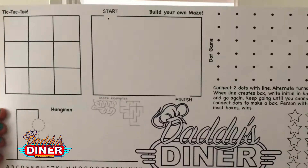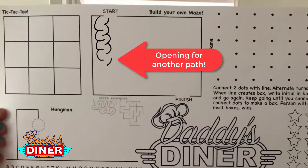Okay, so this is how you build a bubble maze. First you start with one line and then sort of wrap them around to create a path as we're showing here.